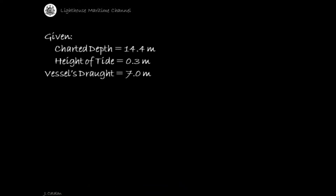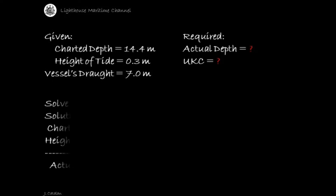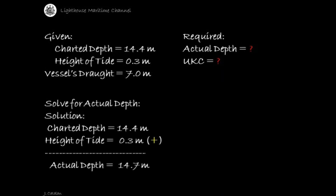Given: charted depth = 14.4 meters, height of tide = 0.3 meters, vessel's draft = 7.0 meters. Solve for actual depth. Solution: charted depth (14.4 meters) added by the height of tide (0.3 meters). The result is the actual depth, which is equal to 14.7 meters.